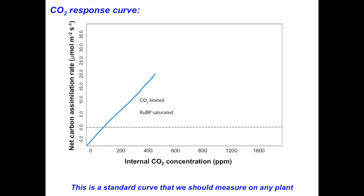This region of the graph is called carboxylation efficiency. The slope is proportional to the maximum activity of the enzyme Rubisco. In this region we are limited by CO2 but have plenty of RuBP, so there isn't much Rubisco activity occurring.